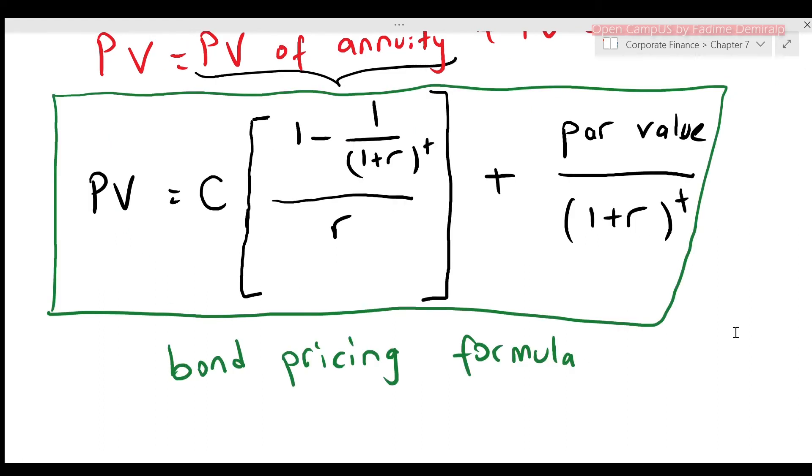The coupon rate and par value are predetermined, but the bond price will change as yield to maturity changes. And as the bond approaches maturity, in other words, as the number of period changes.